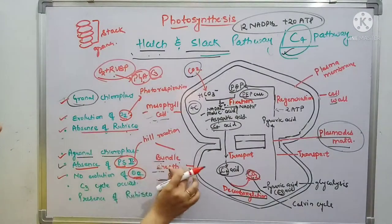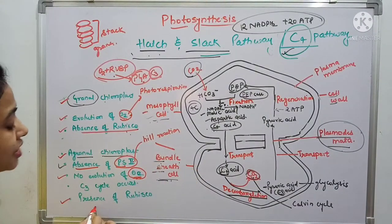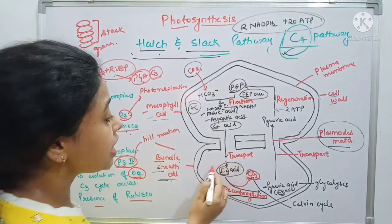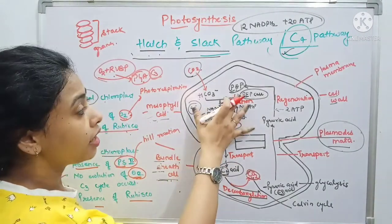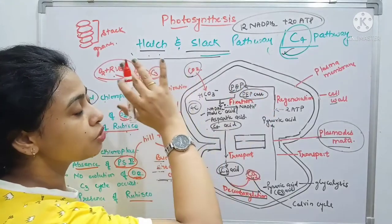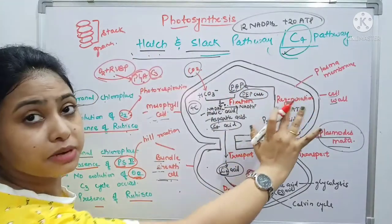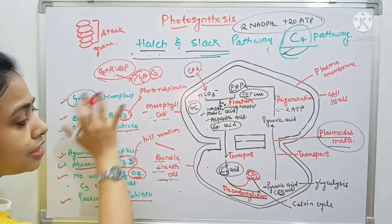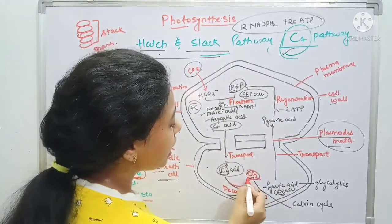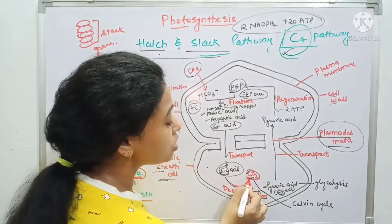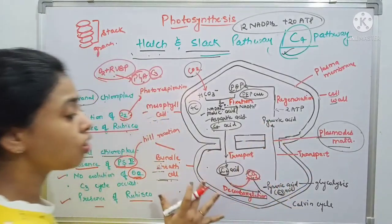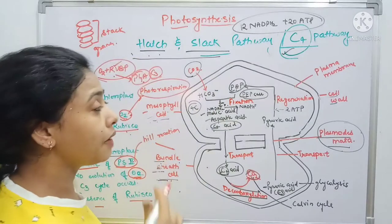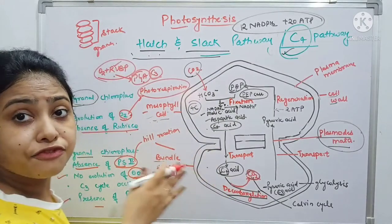In the bundle sheath cell, they show the presence of Rubisco. That is why the C3 cycle is taking place in bundle sheath cells only — the Calvin cycle doesn't take place in the mesophyll cell in case of C4 plants. CO2 is being produced here, and that is why it ensures there is no photorespiration of RuBP taking place in case of C4 plants.